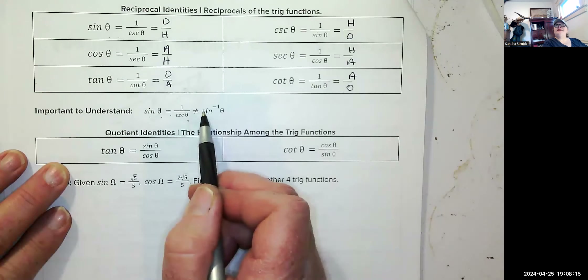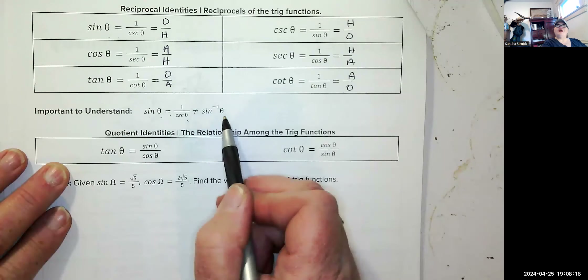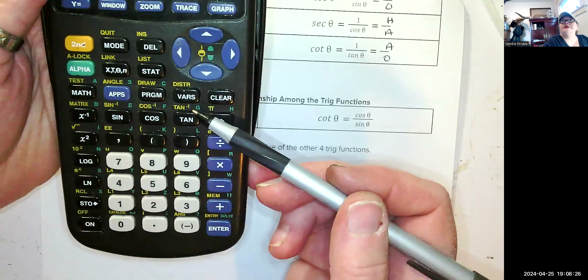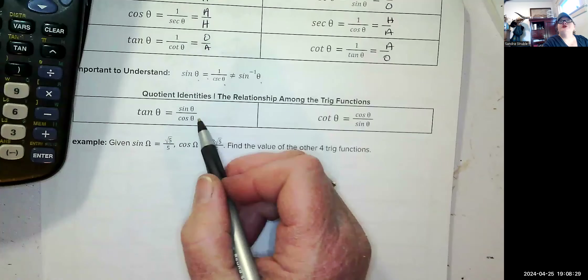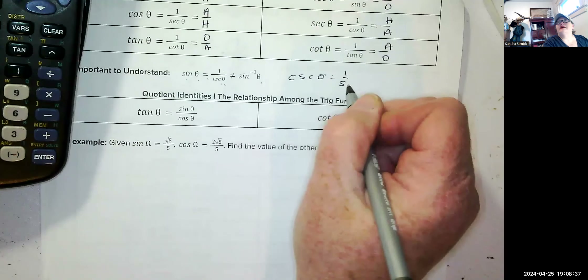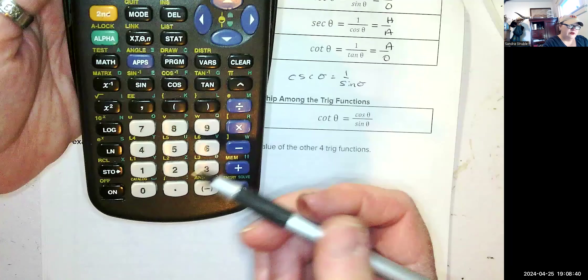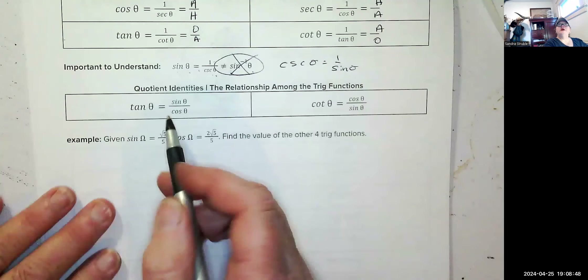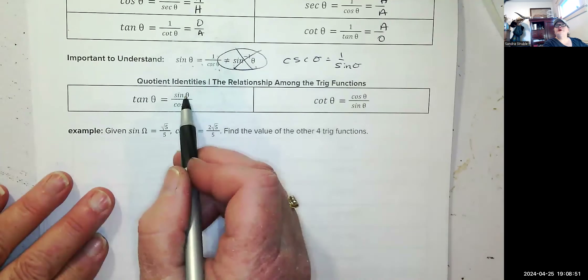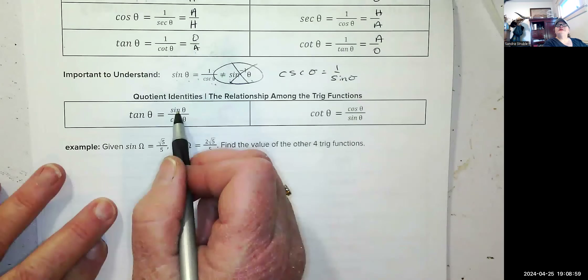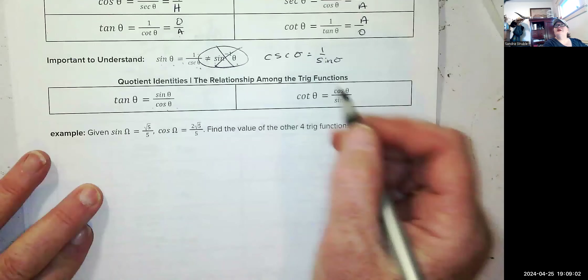You cannot use the inverse sine button on your calculator for cosecant — it will be wrong. You have to use one over sine of your angle. Do not use the inverse functions for this. Quotient identities: tangent equals sine over cosine — it's opposite over adjacent, which gives sine of theta over cosine of theta — and cotangent is the reciprocal: cosine over sine.